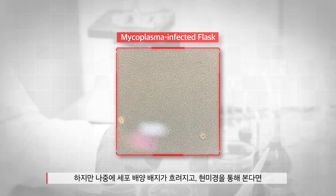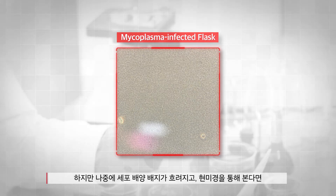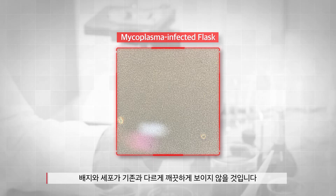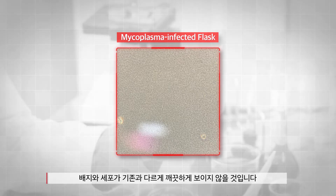Some mycoplasma is as small as 0.2 micrometer and can even pass through 0.22 micrometer filter pores. That is why mycoplasma contamination is so common. Due to the small size, mycoplasma contamination can be difficult to identify at early stages. Only later on, the cell culture media becomes cloudy, and when looking through the microscope the media and cells will not look as clean as usual.